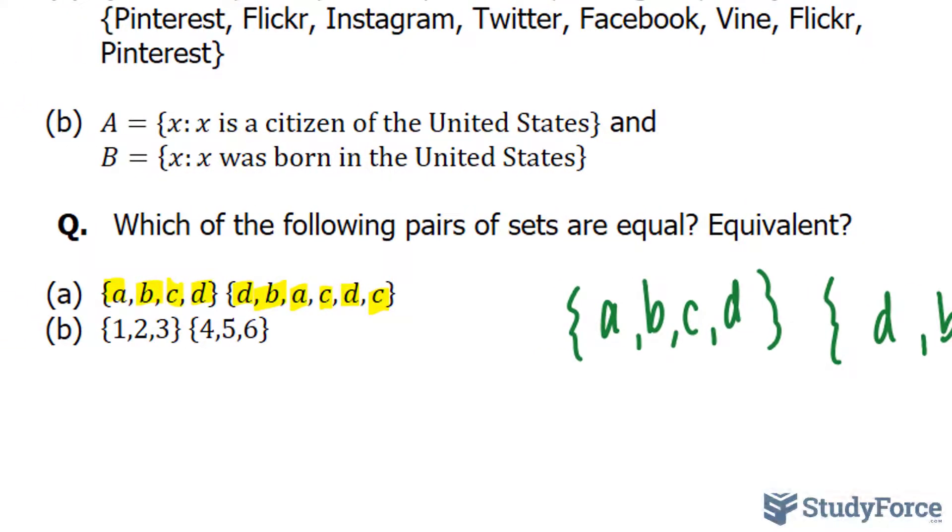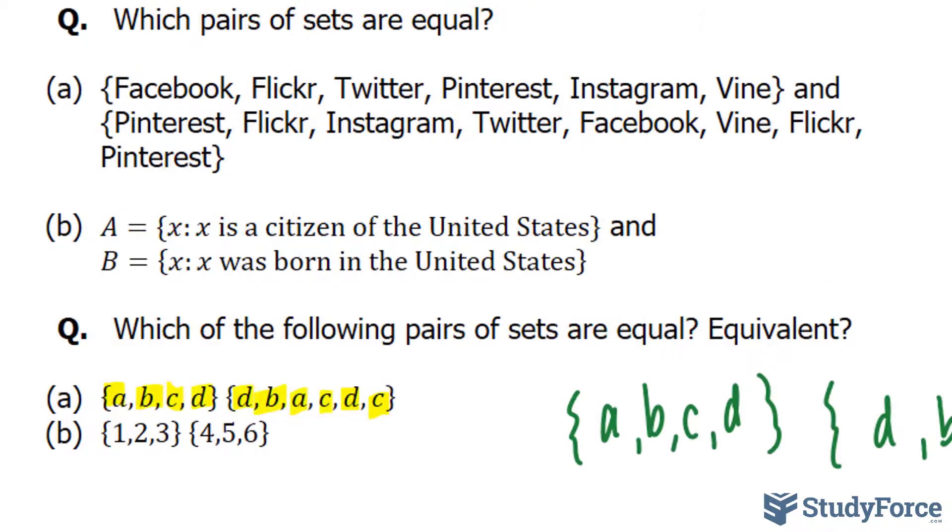Look at the next example. These sets are clearly not equal, but they are equivalent because they can be placed in a one-to-one correspondence. So there are three here and three elements there.